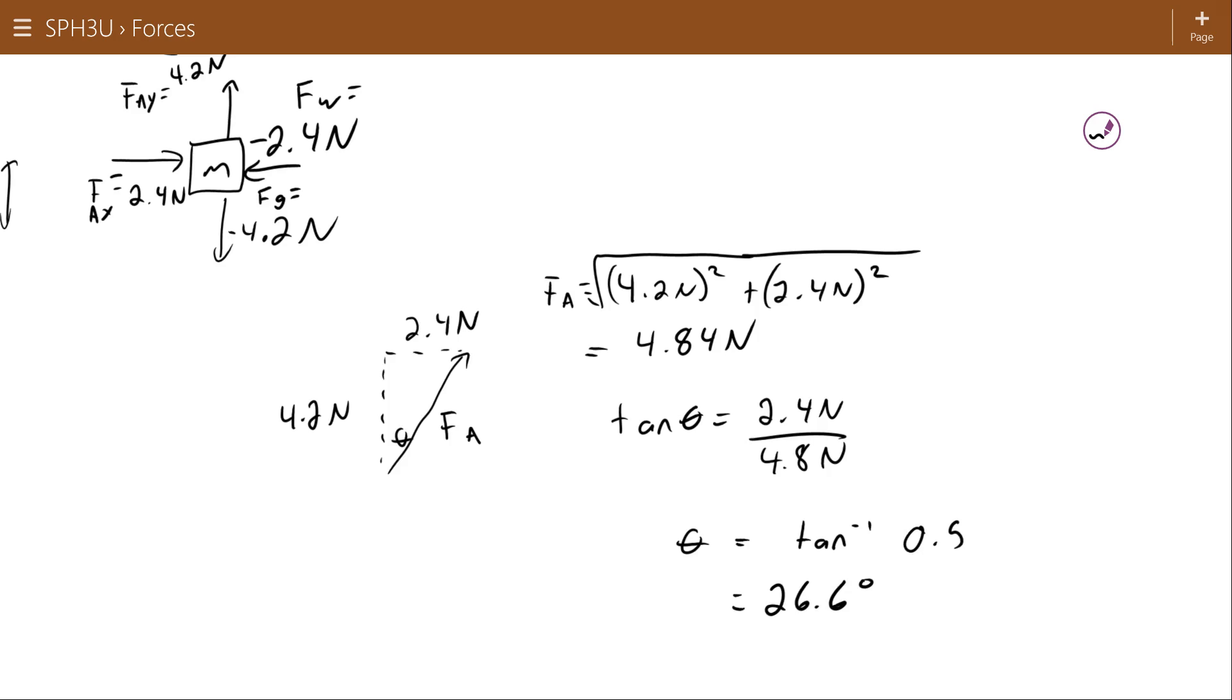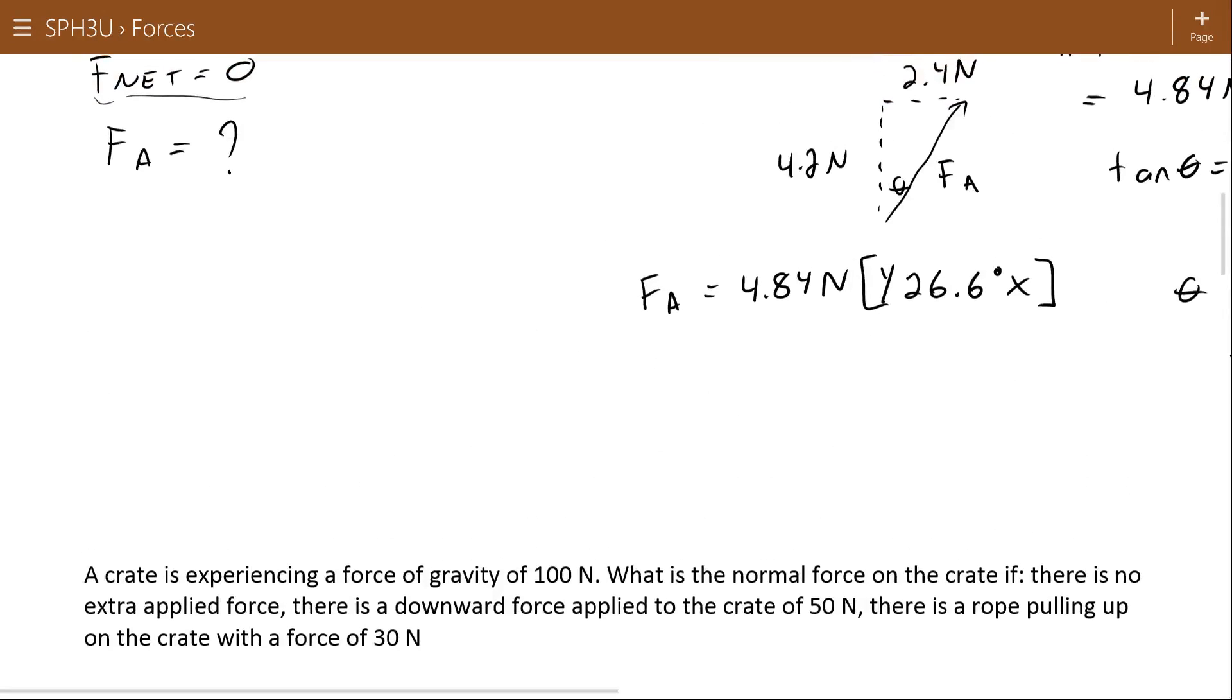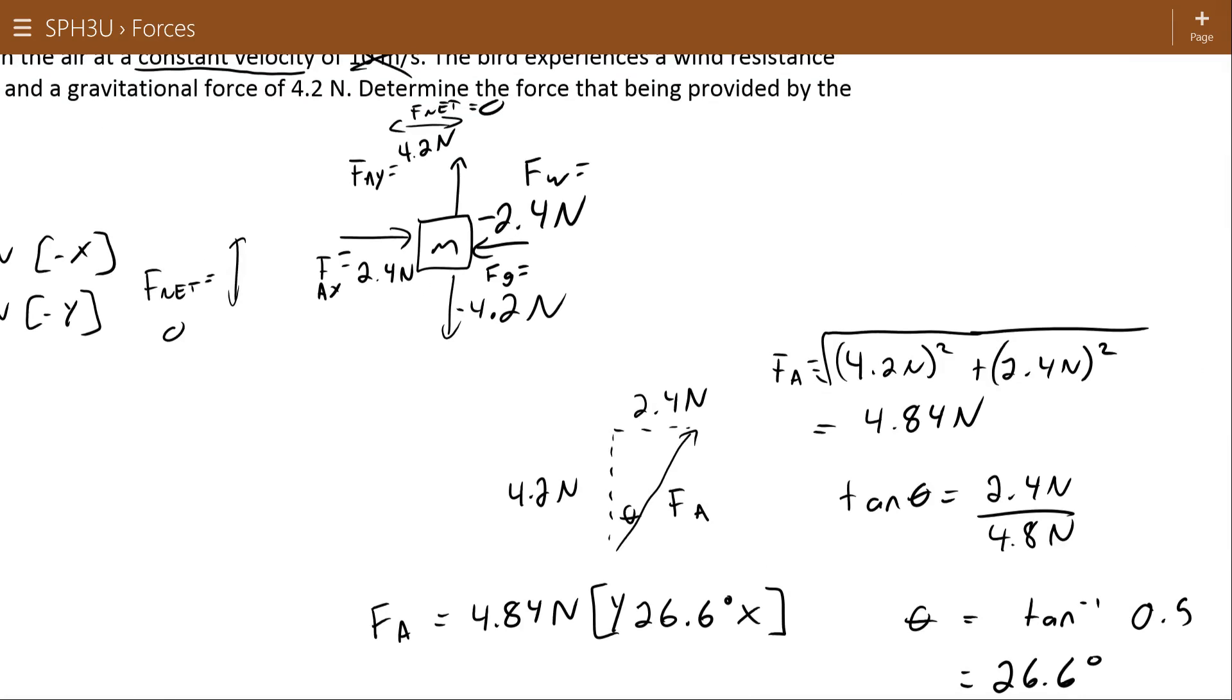So the applied force required to set that net force back to zero is going to be 4.84 Newtons at 26.6 degrees. That's your direction. All right, let's do one more example. Well, let's just pause here for a second to make sure we understand. So what's really going on here is the bird has a force of gravity and a resistive force of the wind, and so to balance those two forces with its wings, it's applying a force that goes like that, and this is the magnitude and direction of that force.